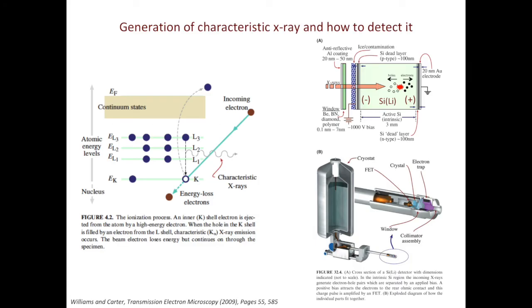You may recall when we discussed inelastic scattering in TEM, characteristic X-ray can be generated. You have the incident electron beam which knocks out the core shell electron. This leaves behind a hole, and the electron at a higher energy level will jump in to fill the hole. The excess amount of energy is released as X-ray.